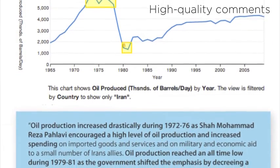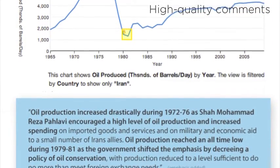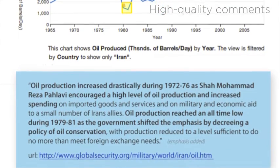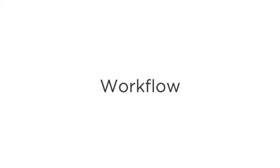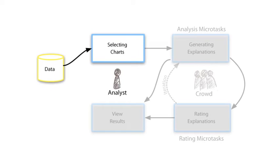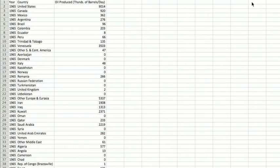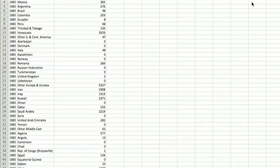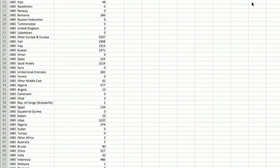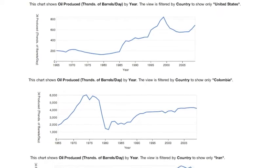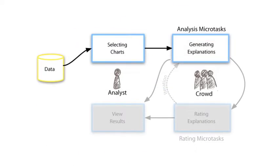We present techniques that allow data analysts to use paid crowd workers to generate hypotheses and explanations on demand. In our workflow, an analyst first selects a set of charts that contain outliers or other features of interest. In a dataset of World Oil Production, for example, an analyst may be interested in variations in production in the most volatile countries. Using an automated script, the analyst selects the series with the greatest variance and posts them to the crowd.